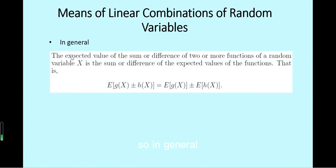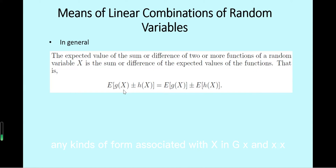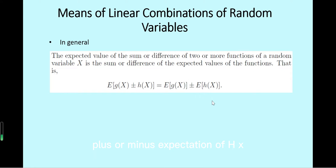In general, the expected value of the sum or difference of two or more functions of a random variable x is the sum or difference of their expected values. This holds whether x is discrete or continuous, so E(g(x) ± h(x)) = E(g(x)) ± E(h(x)).